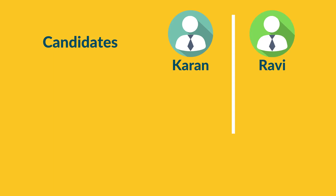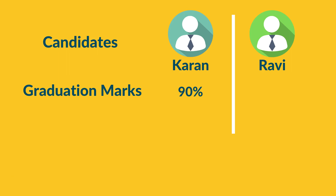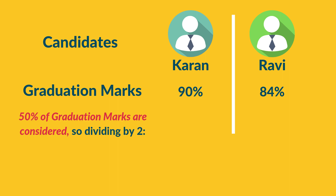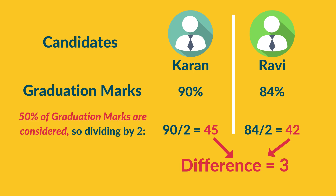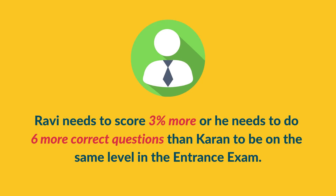Let me demonstrate with a simple calculation. Candidate Karan got 90% in graduation and candidate Ravi got 84%. Since only 50% of graduation marks are counted, divide by 2: Karan has 45% and Ravi has 42% — a difference of only 3%. That means Ravi just needs to answer 6 more correct questions than Karan in the entrance exam to close that gap.